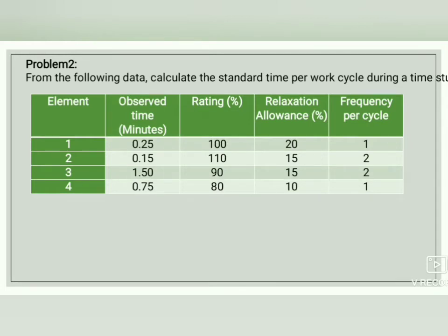Calculate the standard time per work cycle during the time study. Here we have four elements: observed time in minutes, performance rating, relaxation allowance, and frequency per cycle. In the previous problem we had number of cycles; here we have no performance rating given directly per cycle.